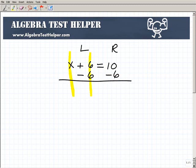And now the last step is you're going to be adding down in a column format. So let's go ahead and take care of the left-hand side. I have x plus nothing is x. 6 plus a negative 6 is 0, or 6 minus 6 is 0. So all I'm left with on the left-hand side of the equation is x, and that's what I wanted.